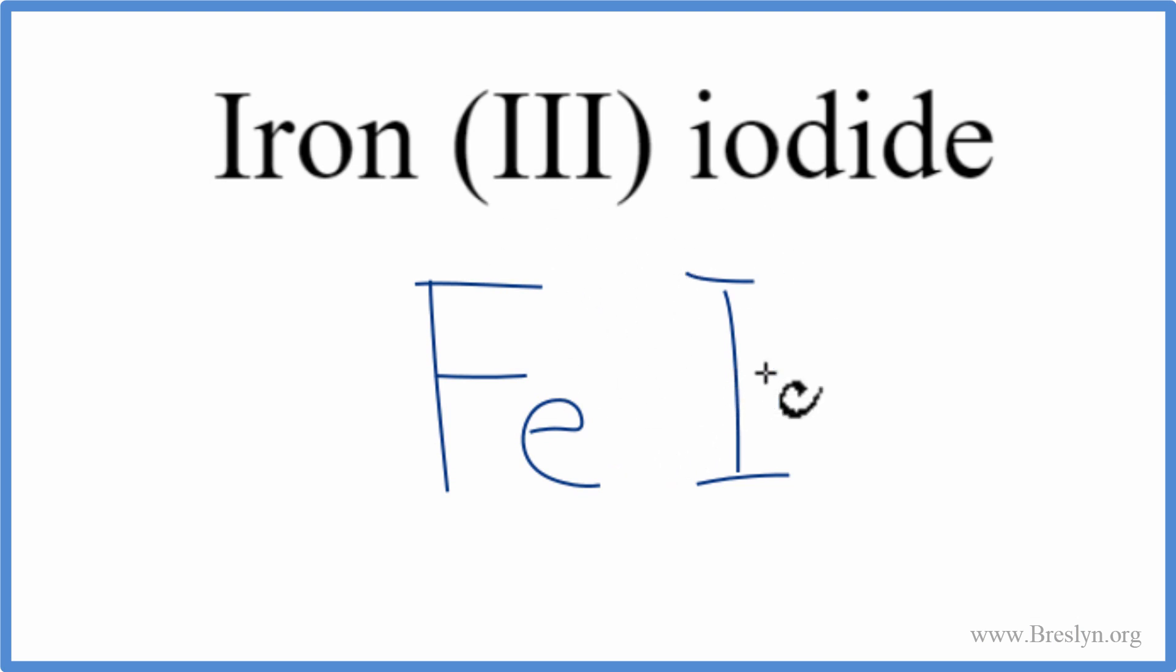And we need to take the charges on each of these elements into account when we write the formula. So iron's nice. It's a transition metal and it tells us right here, this Roman numeral 3, that tells us we have a 3 plus ionic charge. Iodine, we can look up on the periodic table. It has a 1 minus.